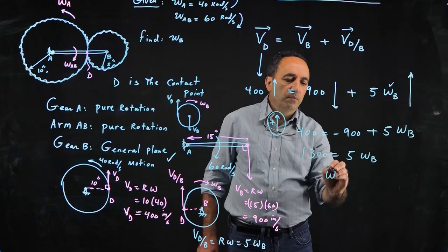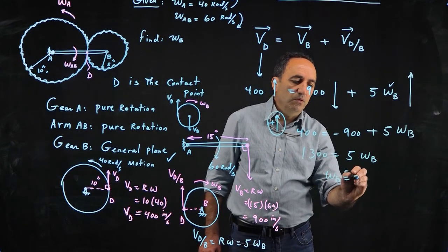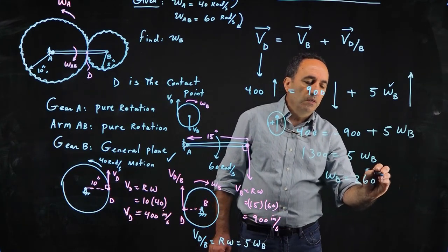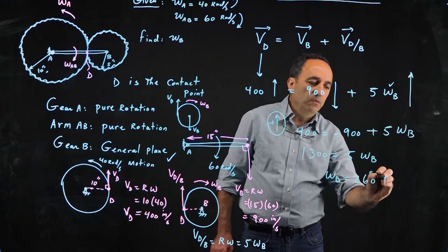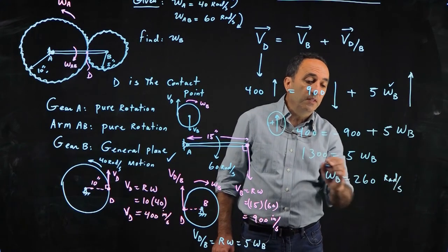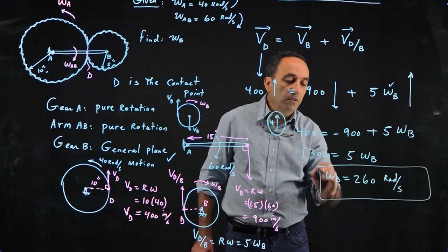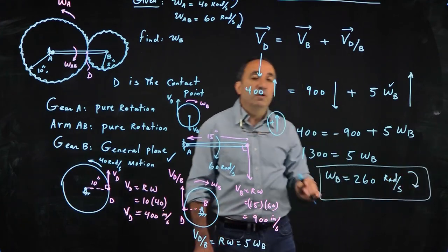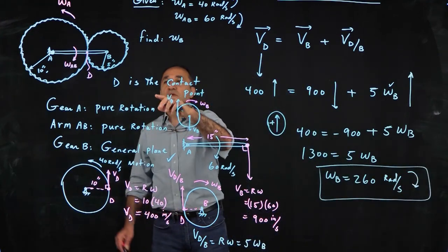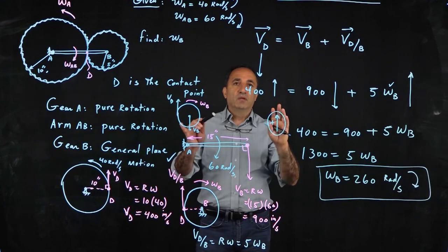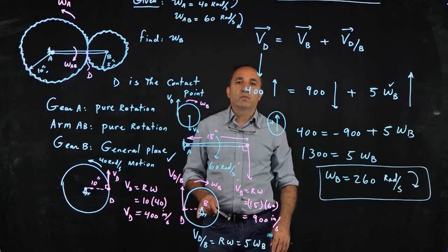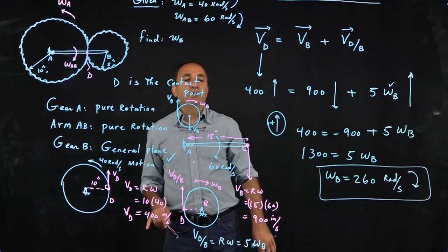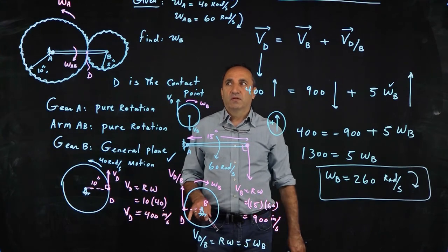Therefore, omega B becomes 260 radians per second, which is totally different than if you made a mistake and thought the motion of gear A and B is just a simple gear ratio problem, as if both gear A and B are fixed.